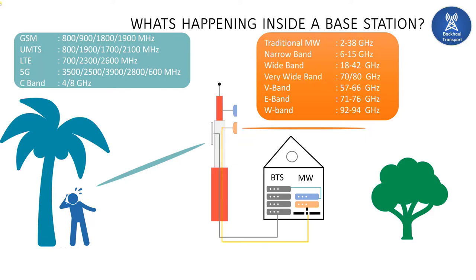When talking about the frequency spectrum in microwave, you should know three terms: unlicensed, licensed, and light licensing. Unlicensed means we can use the frequency without paying to the government or frequency governing body. For licensed frequency, we have to pay and use it in one hop or in one state, depending upon the country's rules and regulations. In light licensing, if you buy a frequency, you can use it across the state. All the new bands — V, E, and W bands — come under light licensing. We have come up with these new bands because we are running out of frequencies in the traditional microwave band and needed to explore new frequency bands.